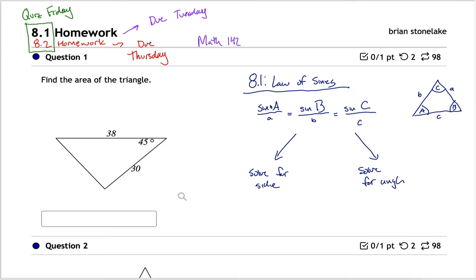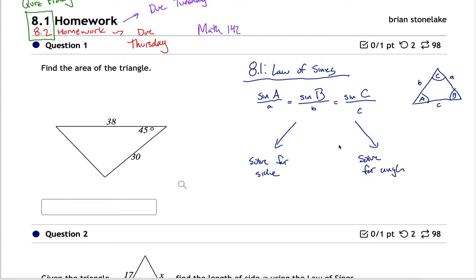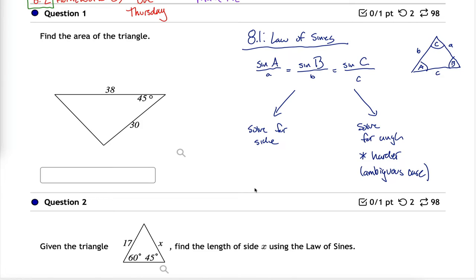There are two different ways to use the law of sines: you can solve for a side length, or solve for an angle measure. It's the same formula, but solving for an angle measure is a lot harder because of the ambiguous case. In either case, there will be at least one angle measure provided. Those provided angle measures can either be memorized values off your unit circle or not — and problems are even harder if those angle measures are not memorized values.